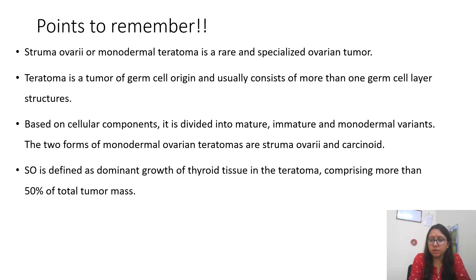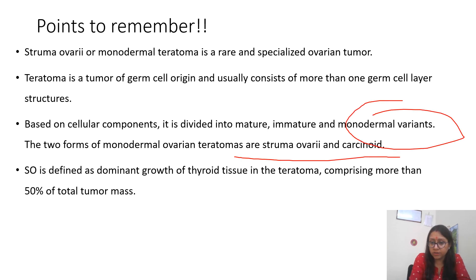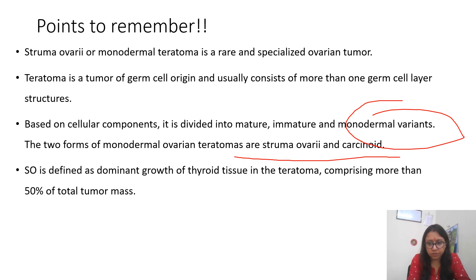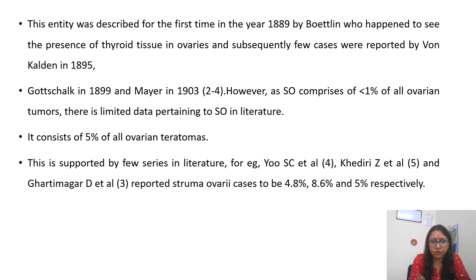Among the monodermal variants, struma ovarii is characterized by dominant growth of thyroid tissue. In this case, 85–90% of the area was covered by thyroid tissue. Normally, if more than 50% of the mass is covered by thyroid tissue, you can label it as struma ovarii.